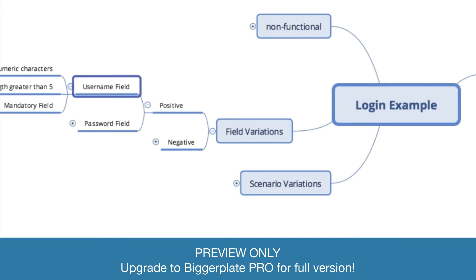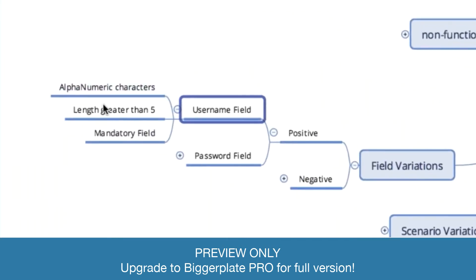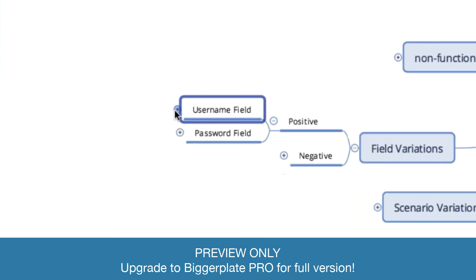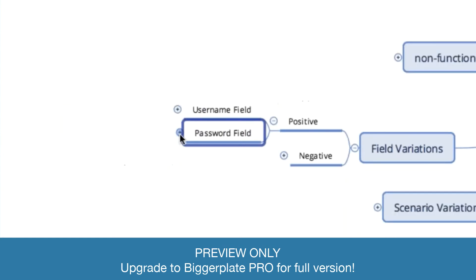On the username field, that would be entering alphanumeric characters, entering a length greater than five for example, and that must be a mandatory field. And then the password field — that is encrypted — and entering whether you have any criteria, whether the length needs to be a specific amount or a combination of alphanumeric, and whether it's a mandatory field or not.